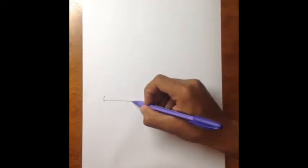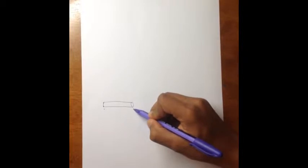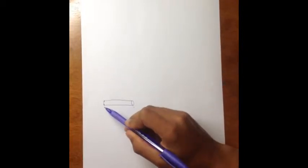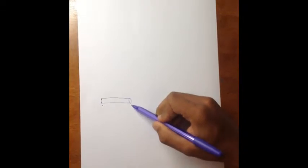So, let's draw a didgeridoo. It's closed at one end where your mouth is and opened at the other end. Here it will have the maximum air pressure and here it will have the minimum air pressure.